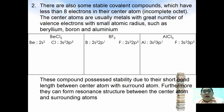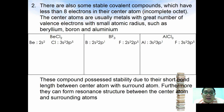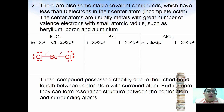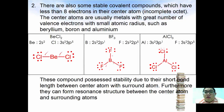There are also stable covalent compounds which have fewer than eight electrons on the central atom — called incomplete octet. The central atoms are usually metals with a small atomic radius such as beryllium, boron, and aluminium. For example, BeCl₂ has only four electrons on beryllium. Boron trifluoride (BF₃) has only six electrons on boron, and aluminium chloride (AlCl₃) also has six. These compounds possess stability due to their short bond lengths between the central atom and surrounding atoms, and they can also form resonance structures.